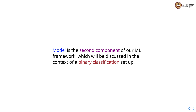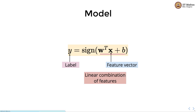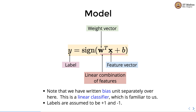Model is the second component of our machine learning framework, discussed in the context of binary classification setup. In the case of SVM, the output y is obtained as the sign of w transpose x plus b. So y is the label, x is the feature vector, and this is the linear combination of features familiar to us. Note that the bias unit is written separately, making this a familiar linear classifier. Labels are assumed to be plus 1 and minus 1.